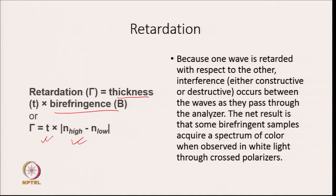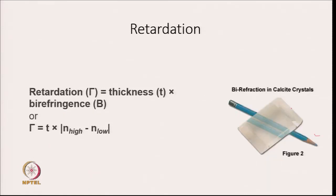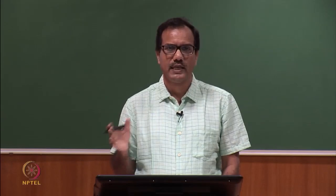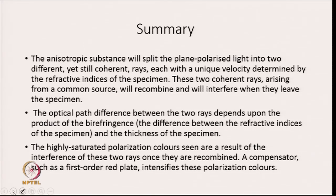This is how contrast is generated in polarization microscopy. In summary, the anisotropic substance splits the plane polarized light into two different yet coherent rays, each with a unique velocity determined by the refractive indices of the specimen. These two coherent rays recombine and interfere when they leave the specimen. The optical path difference depends on the product of birefringence and thickness of the specimen, and the highly saturated polarization colors seen are a result of interference of these two rays once recombined. A compensator such as a first-order red plate intensifies these polarization colors.